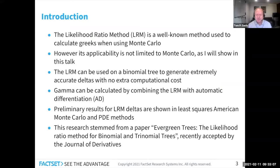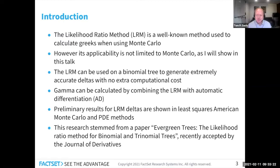But once we have the likelihood ratio method delta, we can combine that with automatic differentiation and we can get a gamma on a tree. I'll go through those results. The gamma result and the title of the talk — 'A Likely Gamma' — come from a paper I just submitted to Risk Magazine. It's in the second round of referees now, and it's on SSRN with a link in the conclusions.